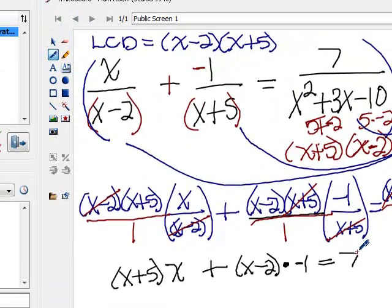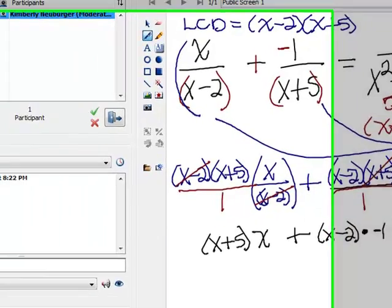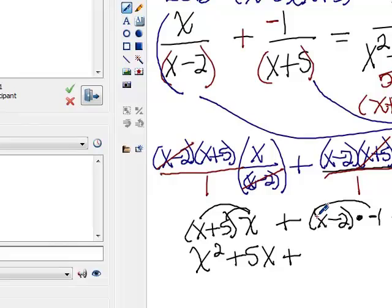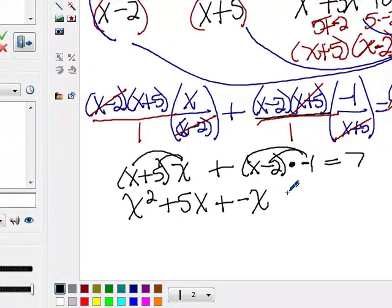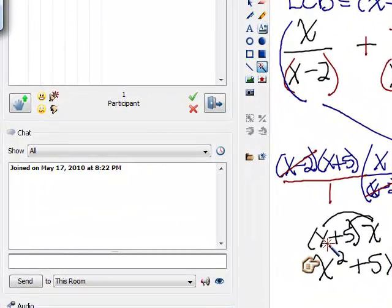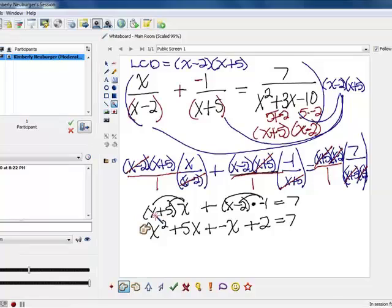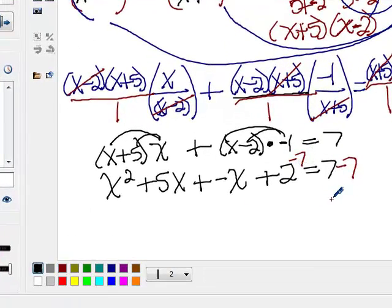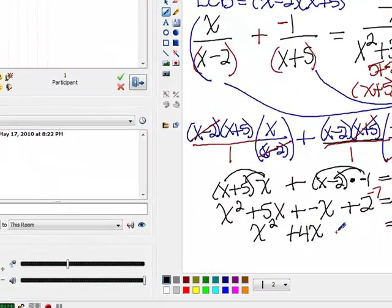So now all of our fractions have disappeared. So we need to simplify and solve this. So I'm going to distribute my x to get x squared plus 5x plus negative 1 times that's going to be negative x. Negative 1 times that will be plus 2. And then I need to move my 7 over. And the reason why I need to do that is because I noticed that there is an x squared here. If you have an x squared in what's left, then you need to get 0 on one side and factor in order to solve the problem. If you don't have an x squared and the highest exponent is 1, you can just solve the problem regularly. But we have an x squared here. So I'm going to need to get 0 on one side. So let's go ahead and subtract 7 from both sides, which will give me a 0 over here. And on the other side, if I combine my like terms, I'll get x squared plus 4x minus 5.